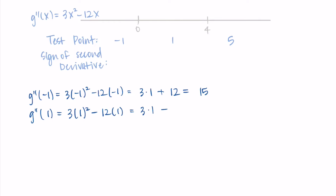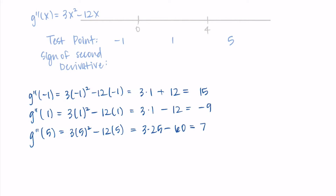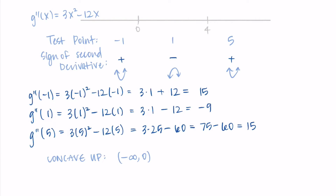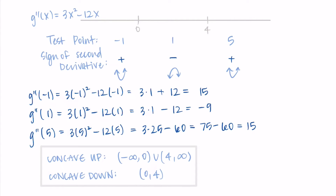At x = −1, the second derivative is positive 15 — a positive value. At x = 1, the second derivative is −9 — a negative value. At x = 5, the second derivative is positive 15 — a positive value. So in the first and last intervals the second derivative is positive, meaning the function is concave up, and in the middle interval it's negative, so the function is concave down. In interval notation: concave up on (−∞, 0) ∪ (4, ∞), and concave down on (0, 4).